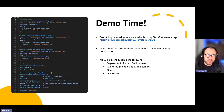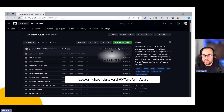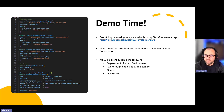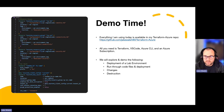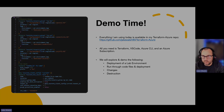Now I'm moving into the demonstration part of the session. Everything I'm using today is available in my Terraform Azure repo at github.com/jakewalsh90/terraform-azure. All you need is Terraform installed, VS Code, and the Azure CLI — plus an Azure subscription to deploy into. We're going to deploy a simple lab environment, run through the code files, look at what's being deployed, then look at making changes, and finally look at destruction.